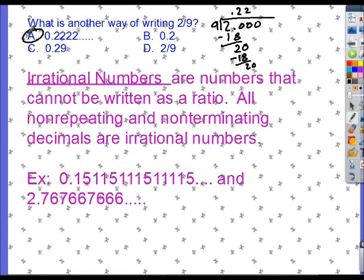Let's take a look at this new stuff. We've got irrational numbers. Irrational numbers are numbers that cannot be written as a ratio. So you cannot write an irrational number as a fraction. All non-repeating and non-terminating decimals are irrational numbers.